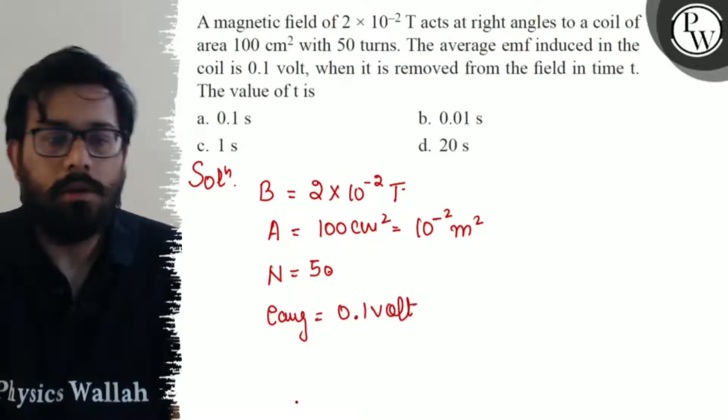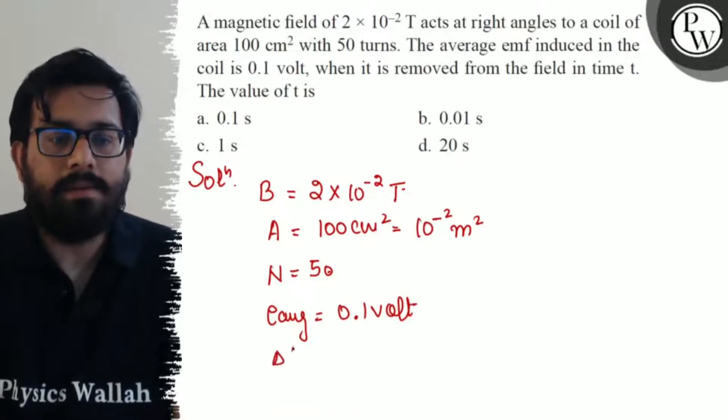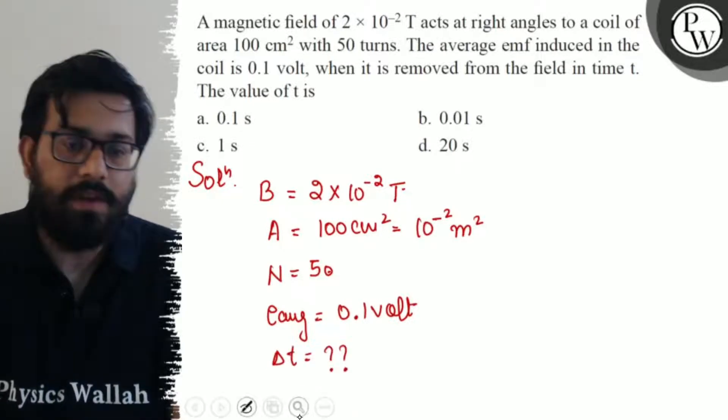The average EMF induced in the coil, E_avg, is given as 0.1 volt.